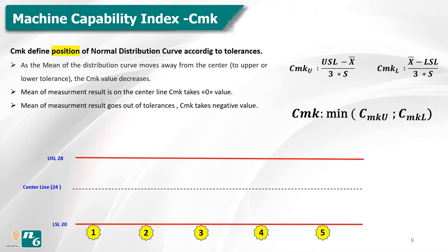What about the machine capability index? If you also want to study the position of the machine's capability in relation to the tolerance limits, you use the CMK index, which describes the capability for position. It is not much use having a high CM if the machine setting is way off-center relative to the middle of the tolerance range. A high CMK index means you have good machine width — a small spread in relation to the tolerance width — and also that it is well centered within the tolerance range. If CMK equals CM, the machine is set to produce exactly in the middle of the tolerance range.